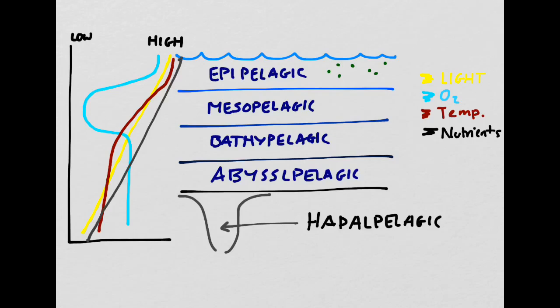Nutrients also tend to follow the profile of light. There are a lot of nutrients in the epipelagic zone, but the deeper you go, the less nutrients tend to be available. Again, the exception to this is when you happen to be near an ocean vent, which we'll talk about later on this term. Ocean vents tend to bring in new nutrients from inside the earth.